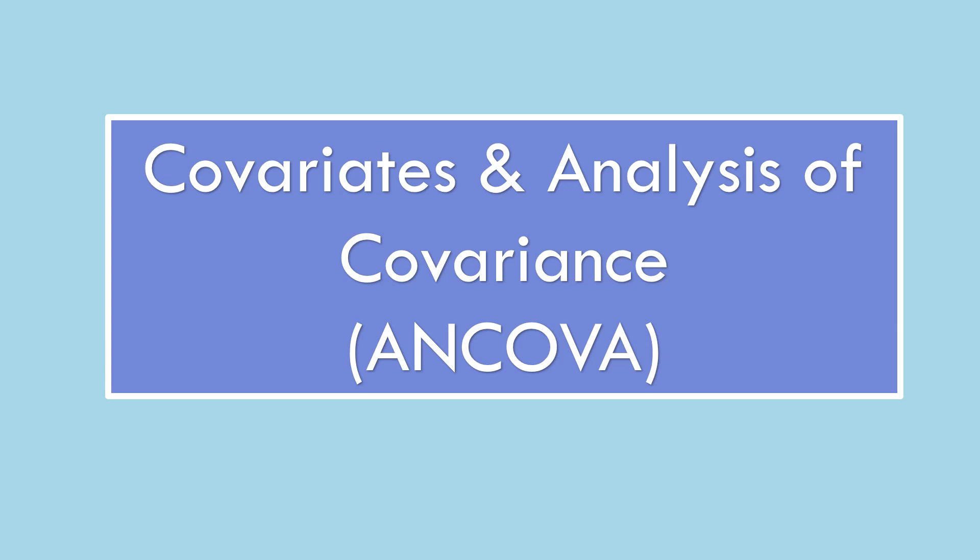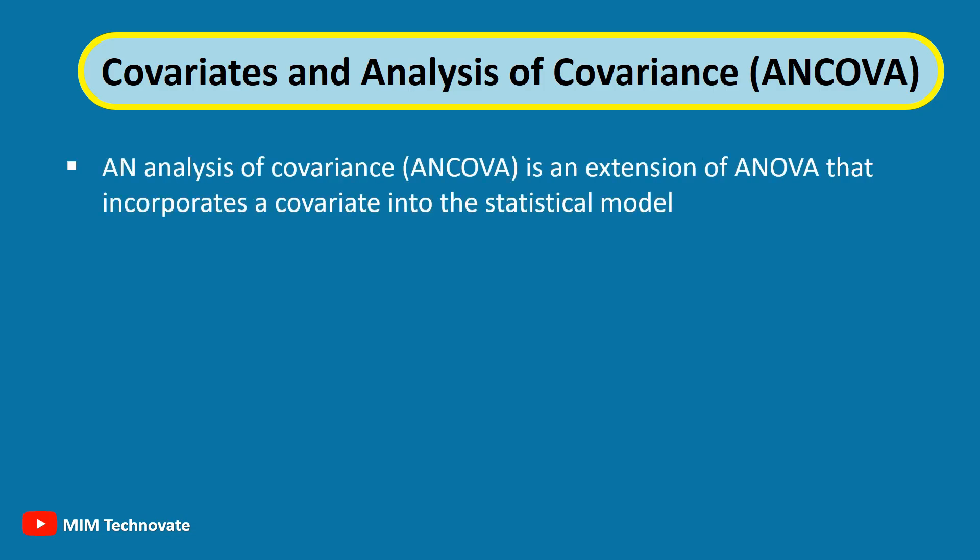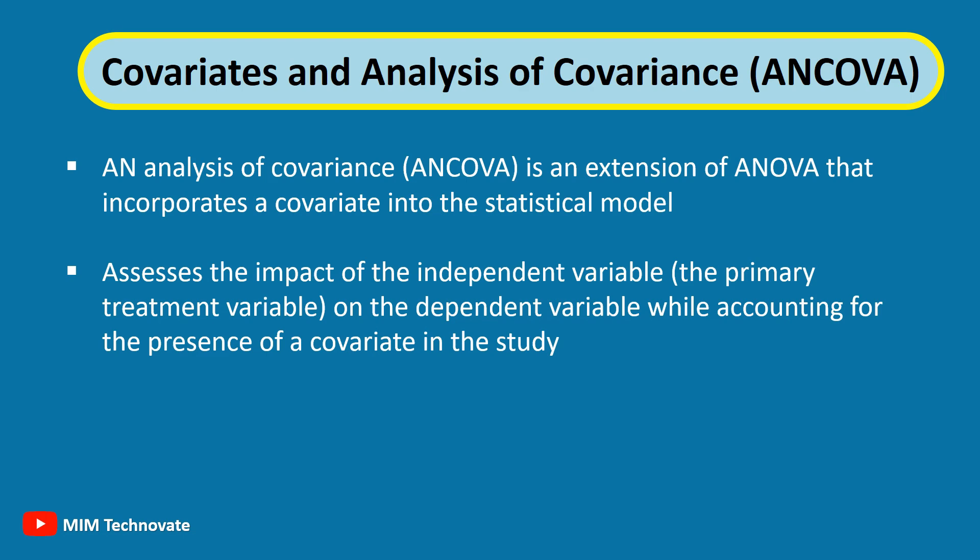Covariates and Analysis of Covariance. Analysis of Covariance, or ANCOVA, is an extension of ANOVA that incorporates a covariate into the statistical model. It assesses the impact of the independent variable — the primary treatment variable — on the dependent variable while accounting for the presence of a covariate in the study.